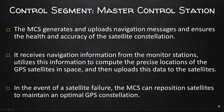The master control station receives navigation information from the monitoring stations, utilizes this information to compute the precise locations of the GPS satellites in space, and then uploads this data to the satellites. In the event of a satellite failure, the master control station can reposition satellites to maintain an optimal GPS constellation. If a satellite gets out of alignment, it will go out of commission, and while it's offline it can be repositioned back into its orbital plane and then come back online for location use.